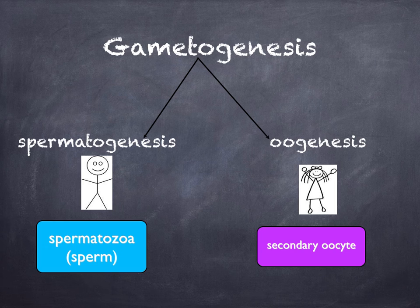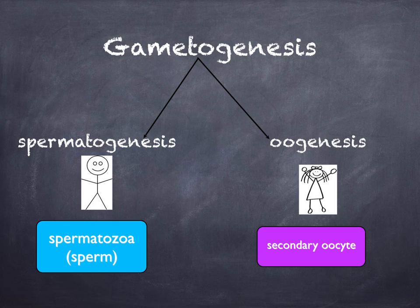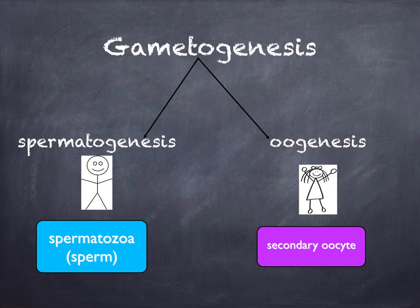In humans you've got two types of gametes: the spermatozoa, which are your sperm, and the secondary oocyte, which is often called the egg or ovum. Strictly speaking, calling it the ovum is incorrect, because the secondary meiotic division which produces the ovum only takes place after the head of the sperm enters the secondary oocyte — so after fertilization has taken place. To be completely correct, the female gamete is actually the secondary oocyte, but often textbooks call it the ovum.